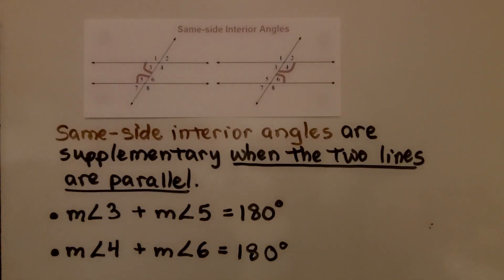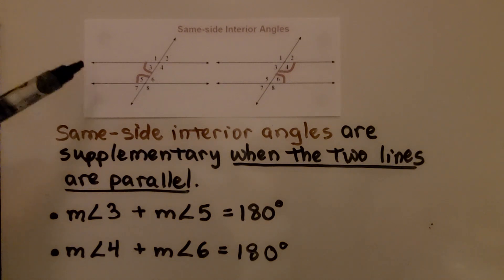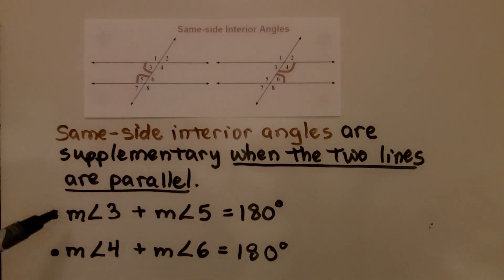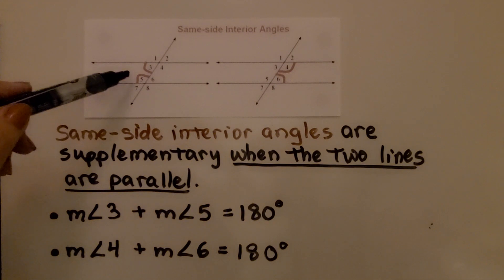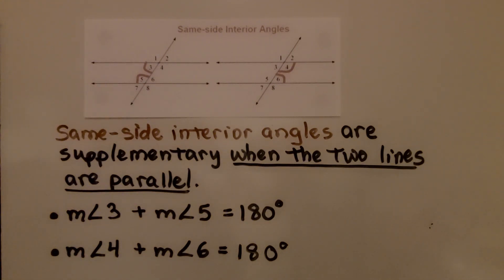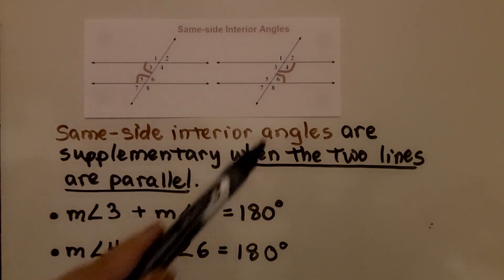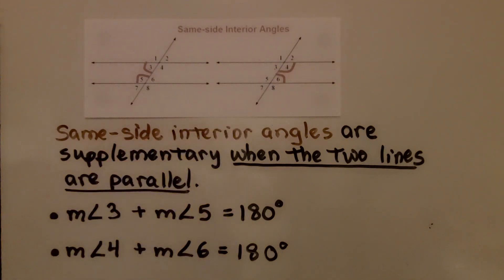We also discussed in the last video how same side interior angles are supplementary — they're supplementary when the two lines are parallel. So the measure of angle three plus the measure of angle five equals 180 degrees. And the measure of angle four plus the measure of angle six also equals 180 degrees. They're supplementary.